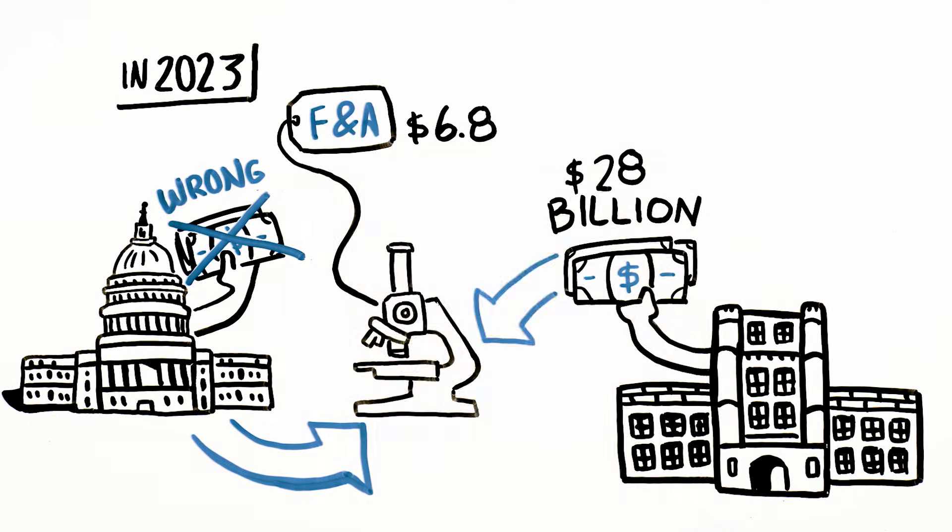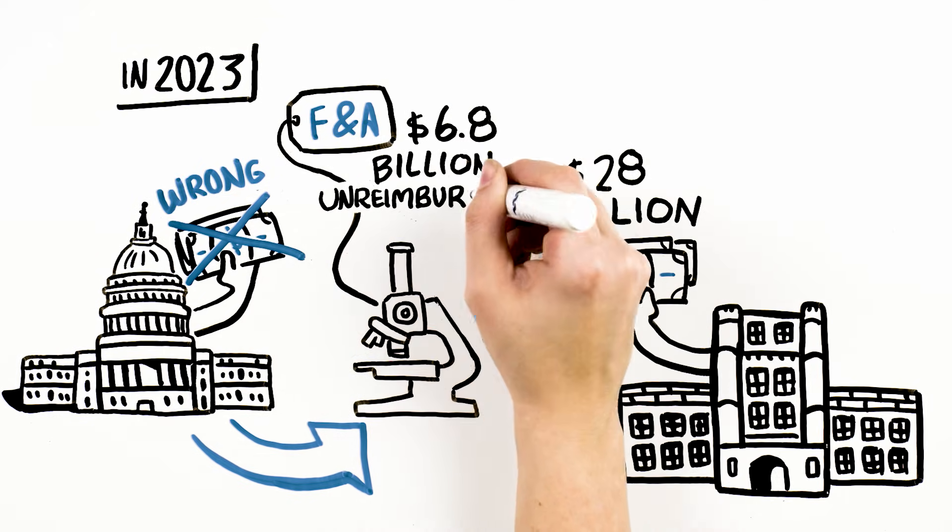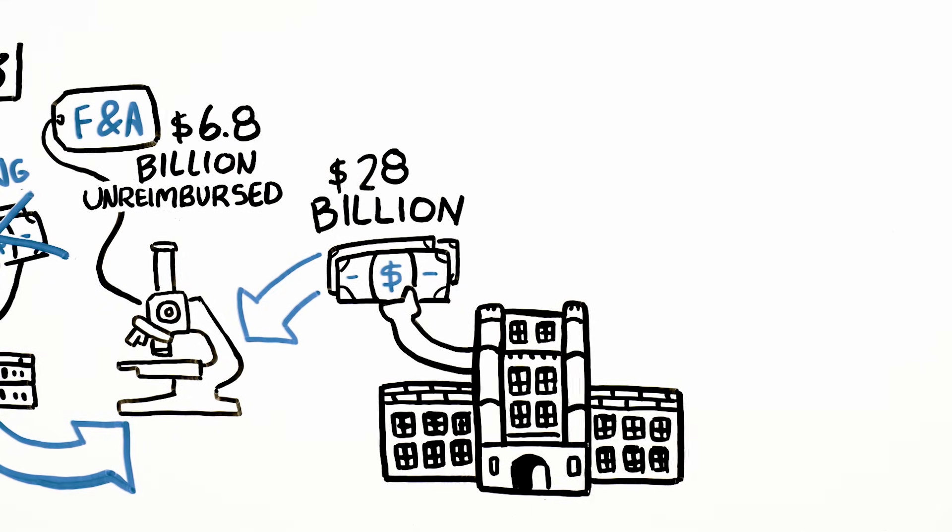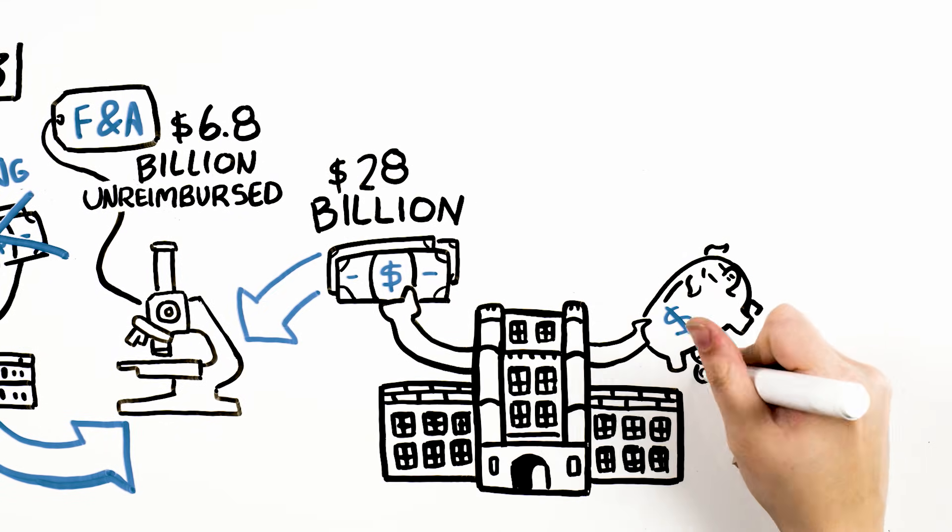This included over $6.8 billion for the federal government's share of F and A costs that it did not reimburse. This means that universities are subsidizing federal research.